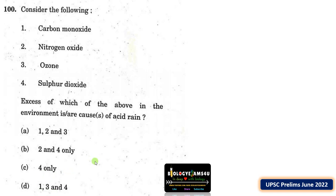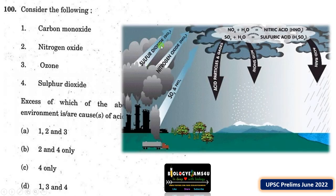In order to answer this question you should know exactly what acid rain is. Acid rain involves oxides of sulfur and nitrogen. Sulfur dioxide and nitrogen oxide are emitted as a result of human activities and volcanic eruptions, or by other natural reasons, and reach the atmosphere. Nitric oxide and sulfur dioxide combine with water forming nitric acid and sulfuric acid respectively.